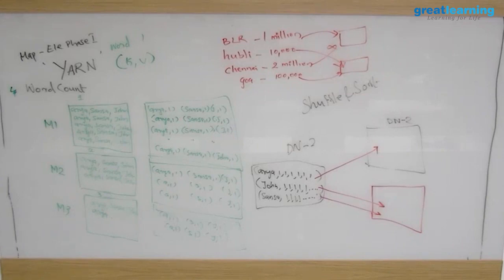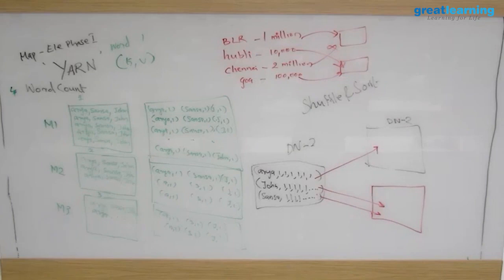In the ICICI Bank case, if you do it like this, the first reducer will take a lot of time to complete because it has to add three million values, while the second reducer will be very fast with only one hundred thousand values.